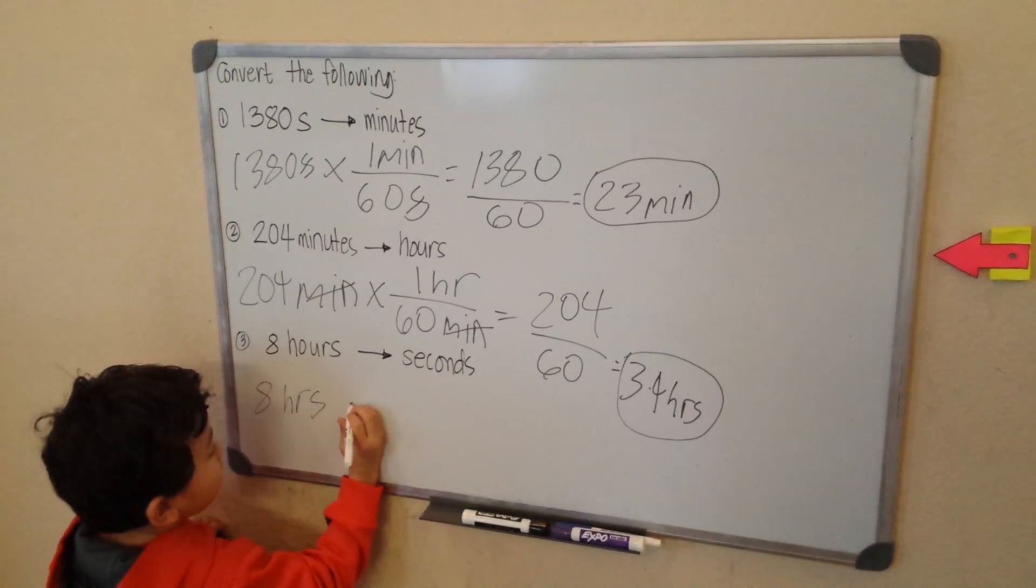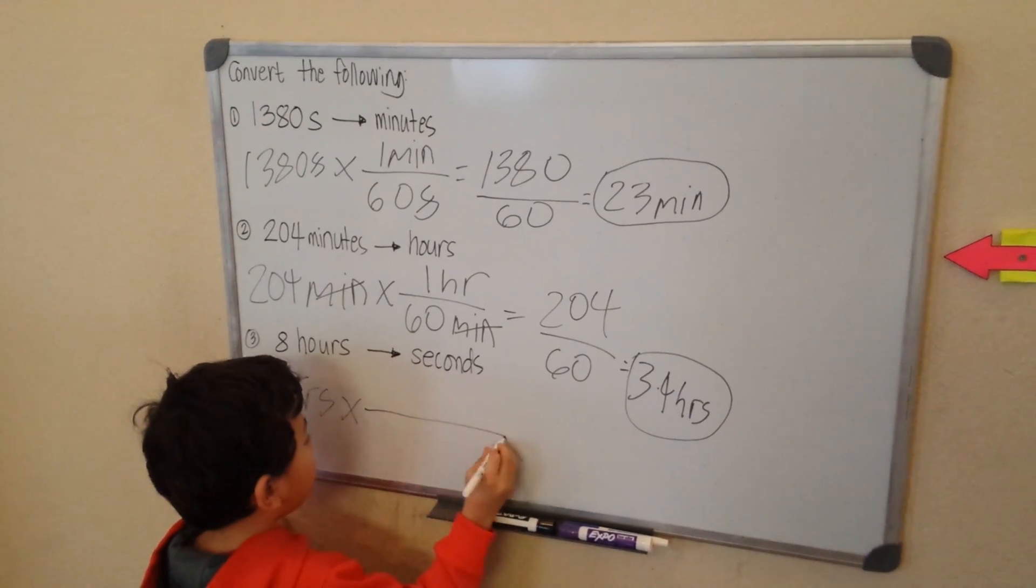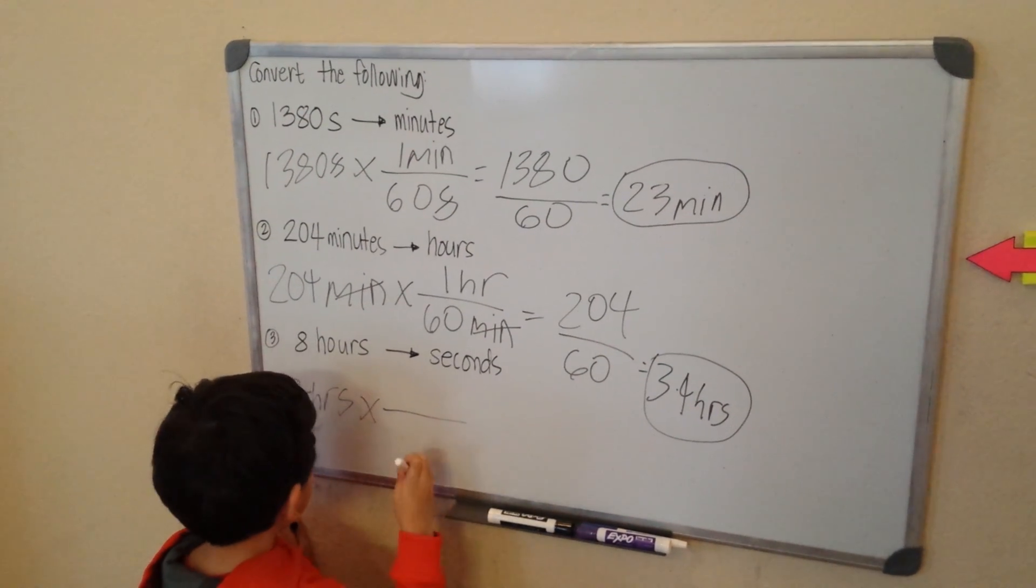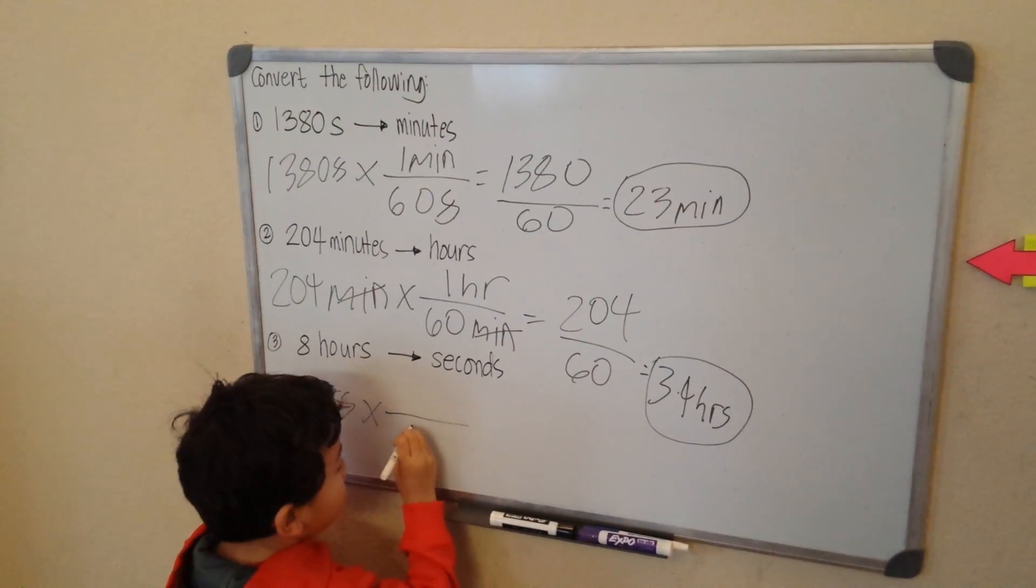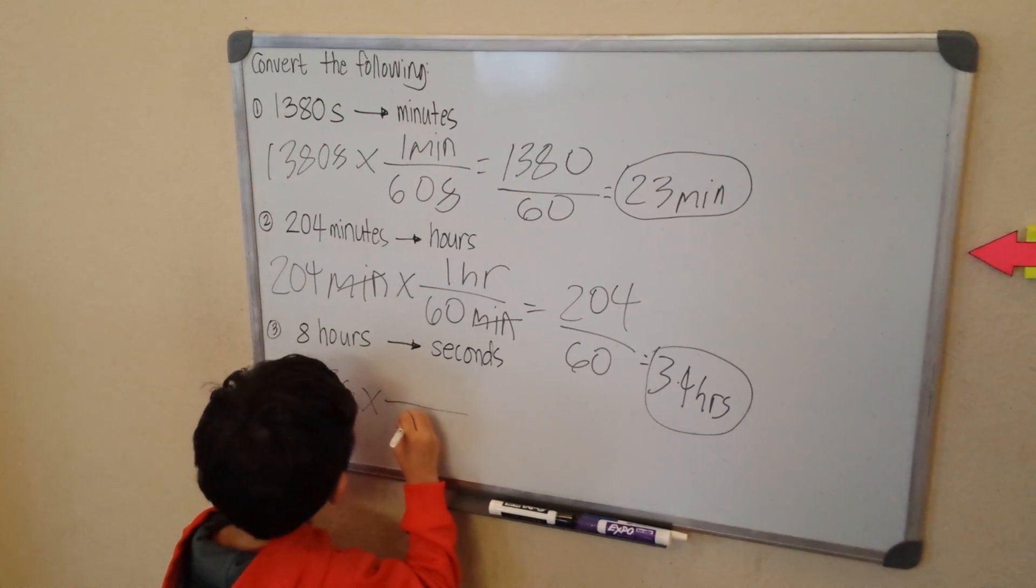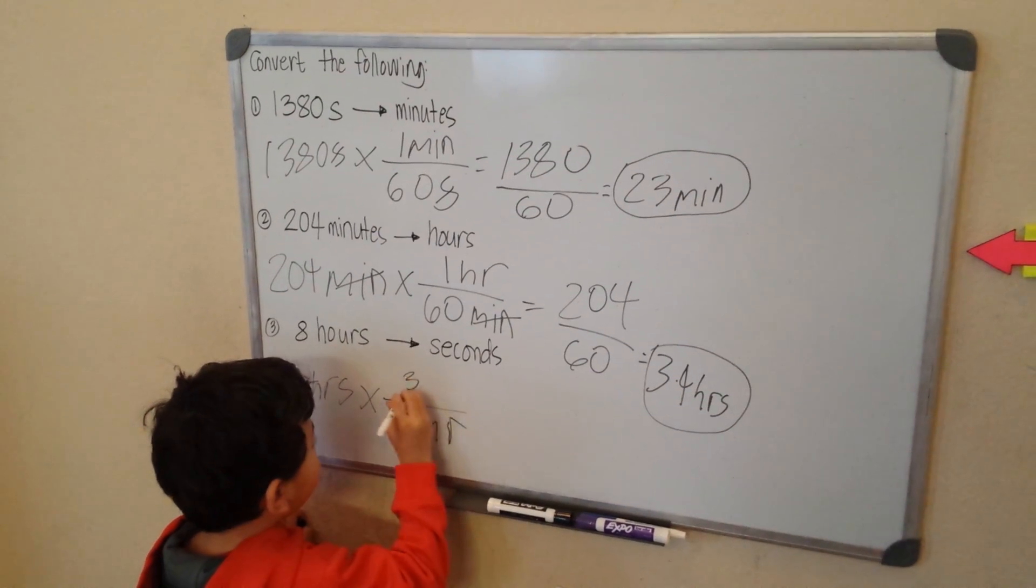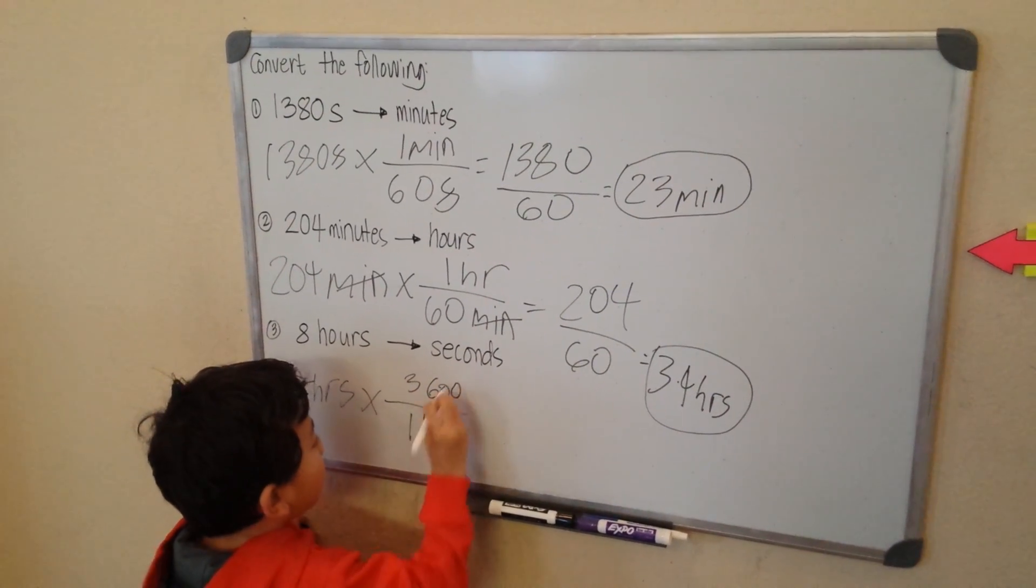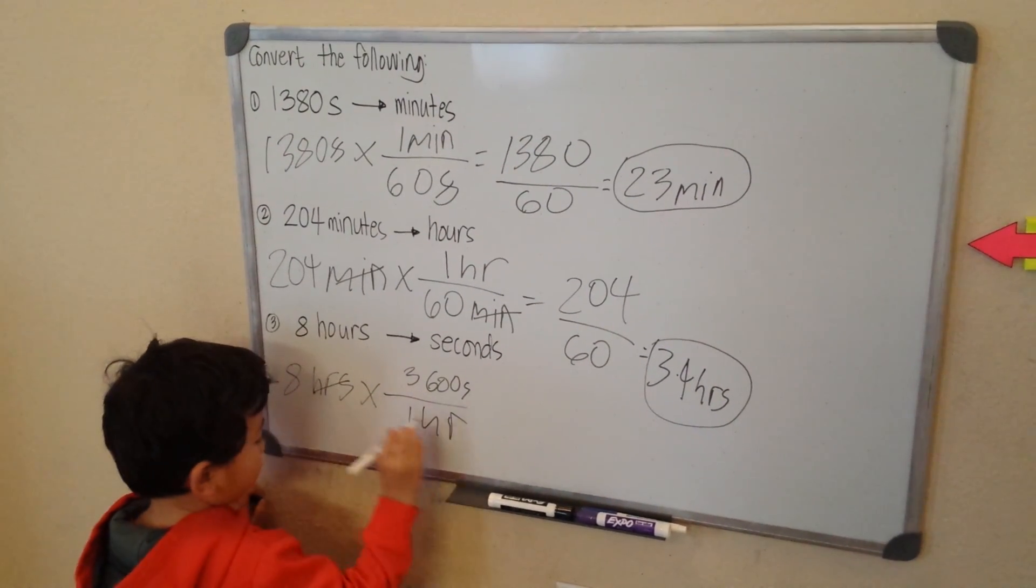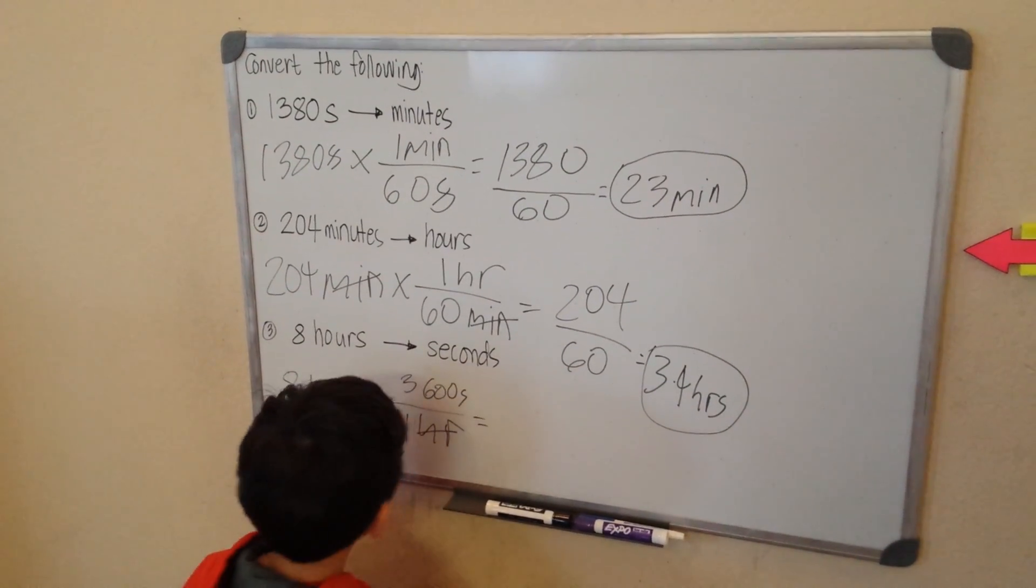Eight hours. I already did the middle. Seconds at the top. I think I can get like there. So, I have more space. One hour has 3,600 seconds. We can cross hours and hours. Then, we can multiply.